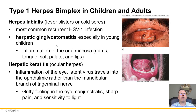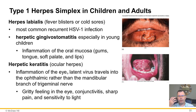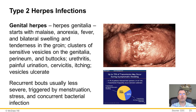Common HSV infections include herpes labialis — fever blisters and cold sores on the lips, the most common recurrent HSV-1 infection. You can get gingivostomatitis in young children, with inflammation of the gums, soft palate, and lips — massive canker sores in the mouth. Herpetic keratitis is ocular herpes getting around the eye and eyelid, causing a gritty feeling, conjunctivitis, pink eye, sharp pain, and sensitivity to light due to lesions in and around the eye.